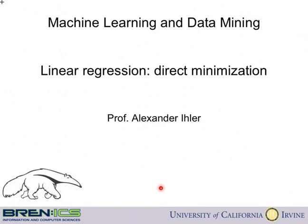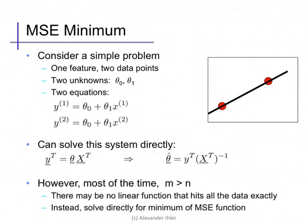For linear regression with the mean squared error loss, it turns out that we can also compute the optimal values of theta in closed form. Consider the following simple problem in which we have only two data points to fit a line. Our two data points give us two equations corresponding to each data point, each of which has two unknowns, theta 0 and theta 1, and we can just solve this set of linear equations.